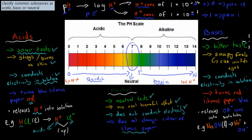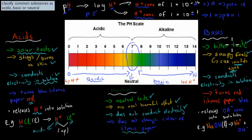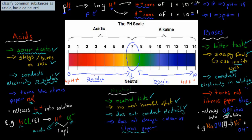Bases taste bitter — for example, toothpaste is a base and it tastes bitter. They have a soapy feel; all your soaps are generally bases. When shampoo gets in your eyes it irritates them, and that's because it's a base. Bases also conduct electricity, just like acids do, and they turn red litmus paper to blue — whereas acids turn blue litmus paper to red. Bases release hydroxide ions (OH⁻) when in solution. For example, sodium hydroxide (NaOH) in water releases Na⁺ ions and OH⁻ ions, and it's the hydroxide ions that make it basic.